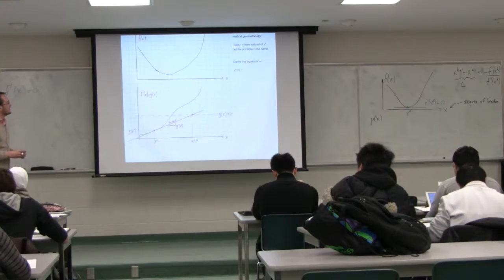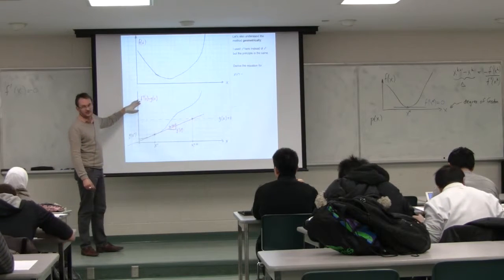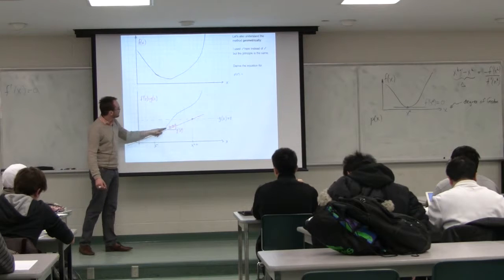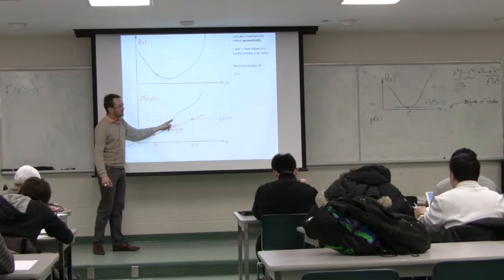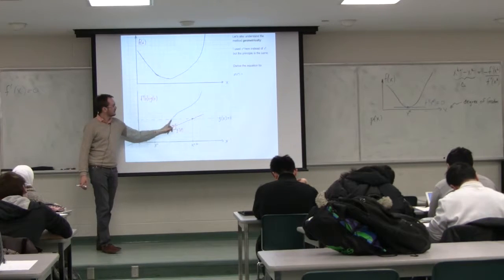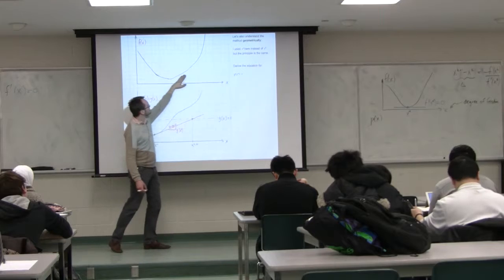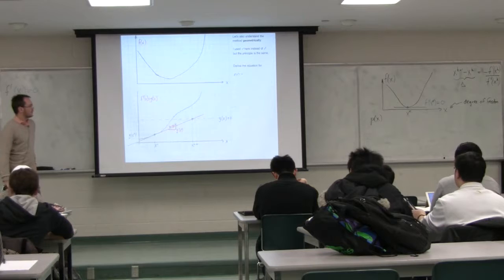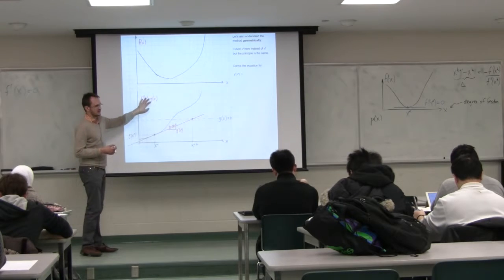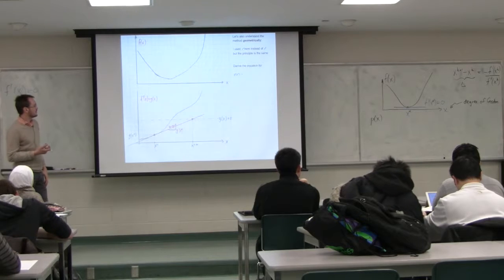If we take this function f of x — this is the function I'm trying to find the minimum for — I can draw below it the first derivative. We've got a negative slope, fairly constant, and as we move along that slope becomes less and less negative, and at the optimum that slope is zero. That's the point I'm really interested in finding — where that line crosses zero. For convenience I'll call f prime of x just g of x. My goal is to find where g of x equals zero.